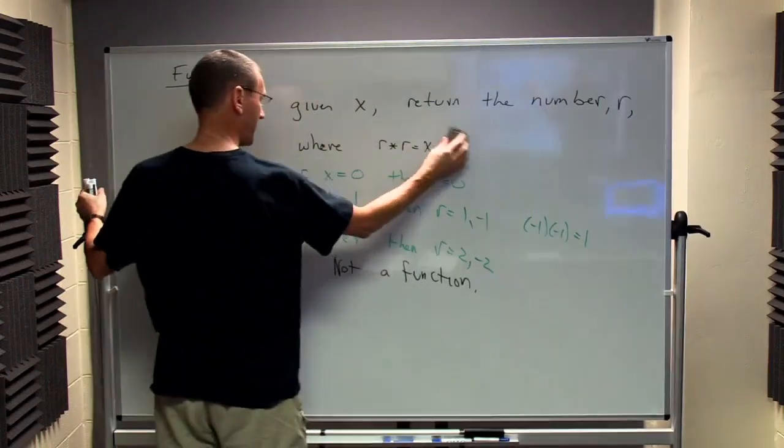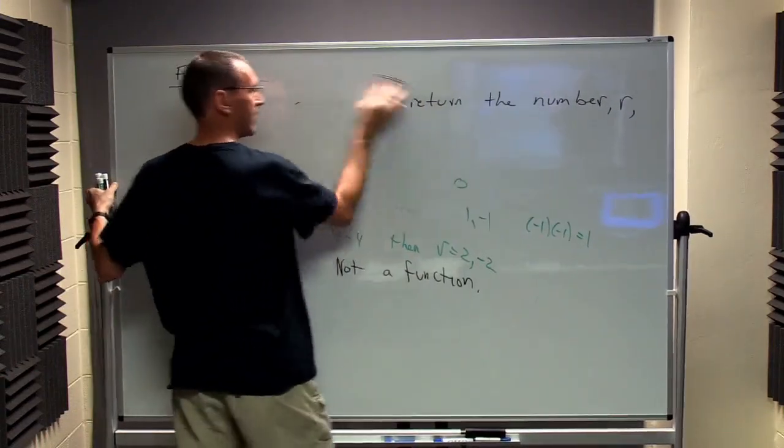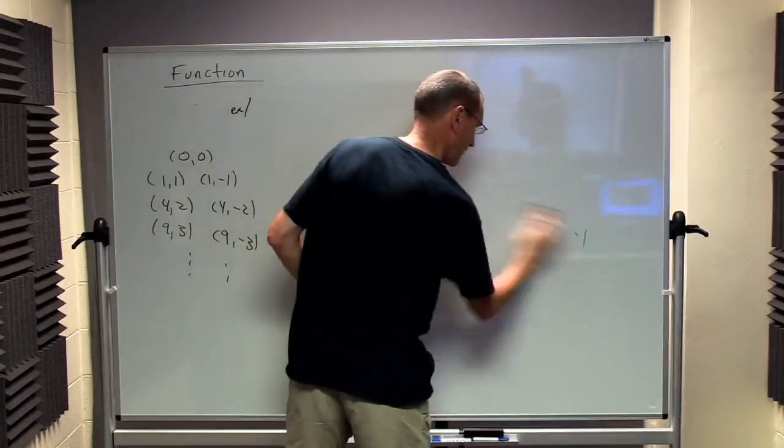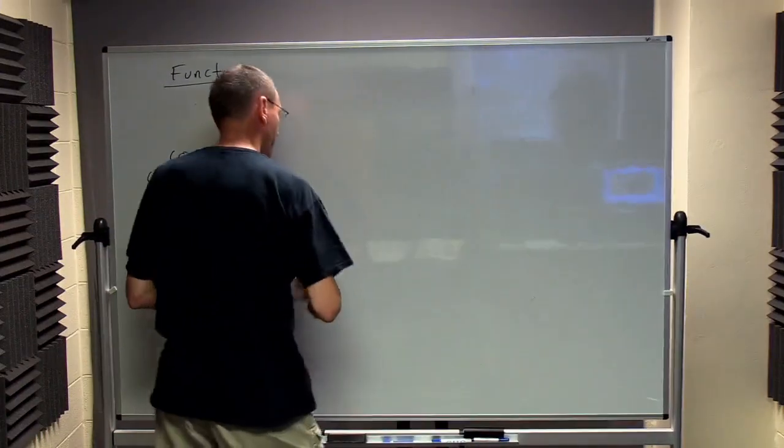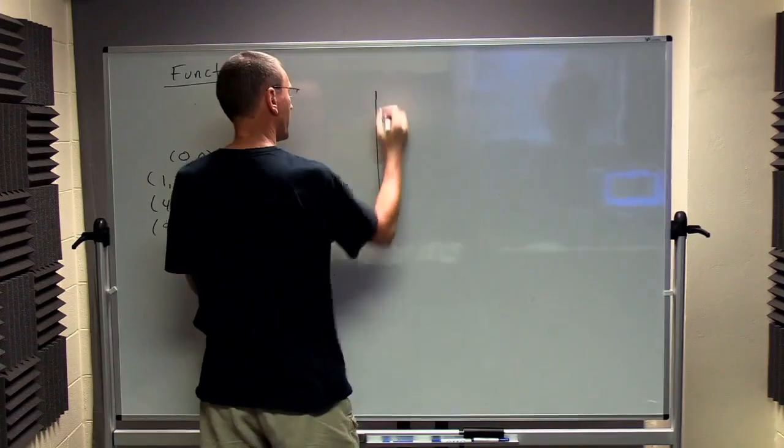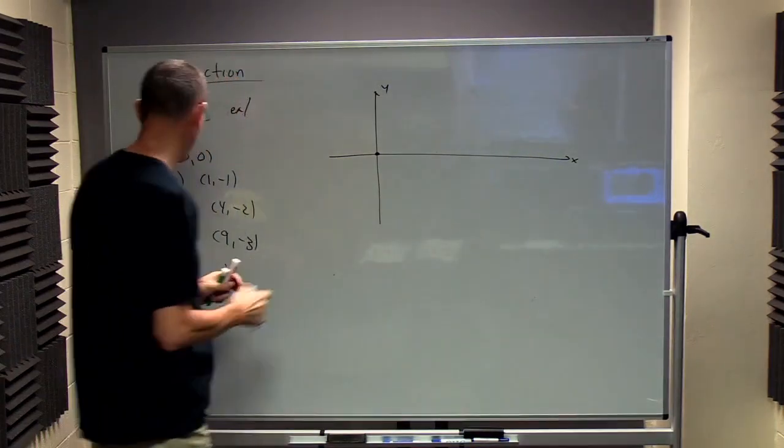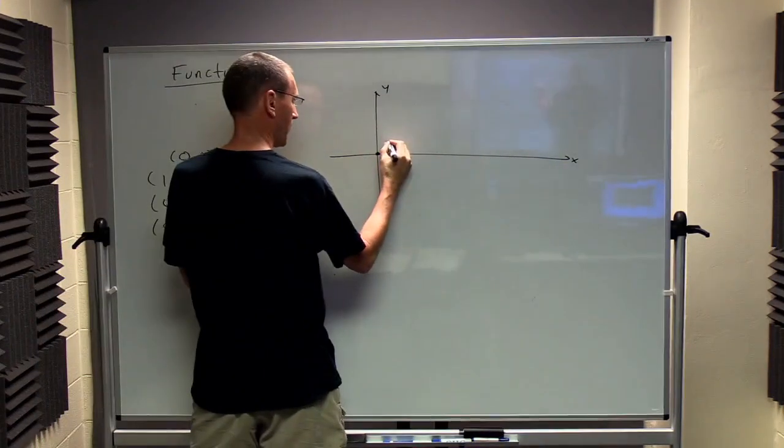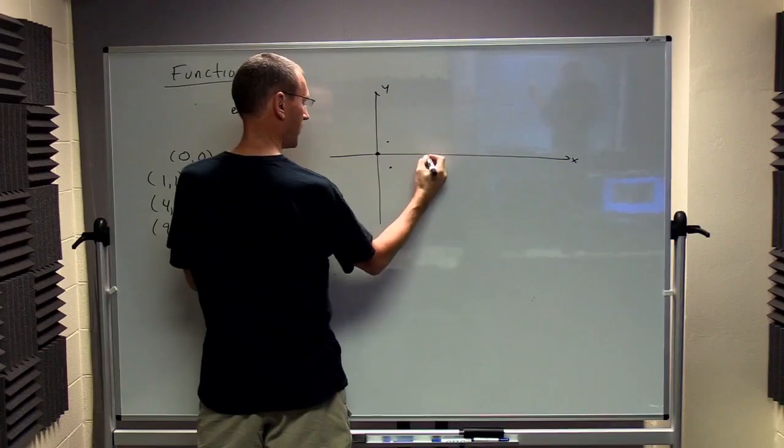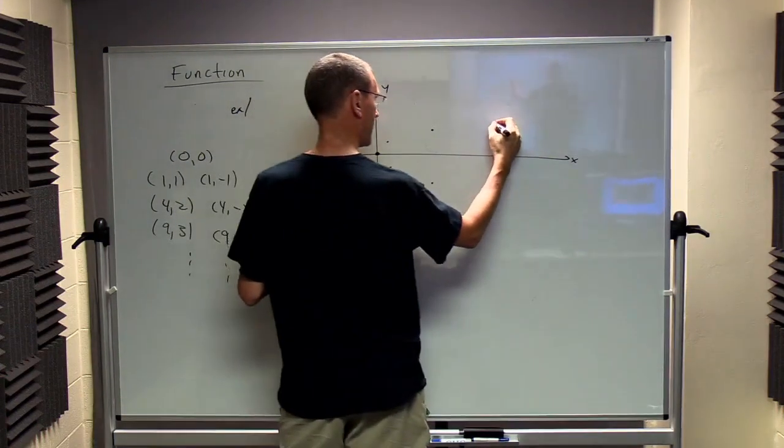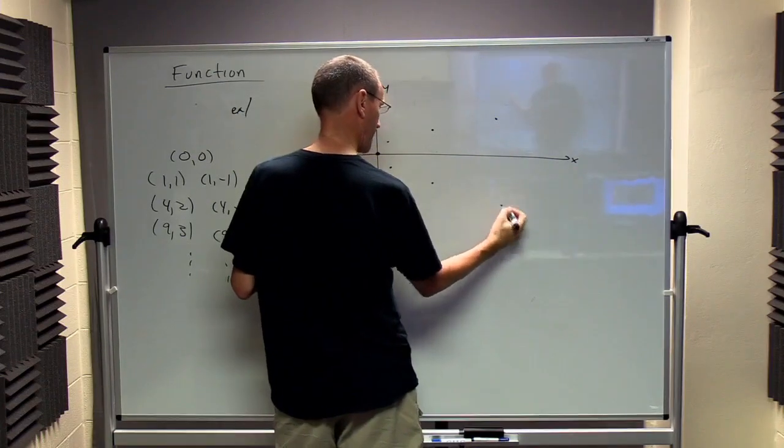So what happens? Let me graph this. Let me find the graph of this thing. So we have 0, 0. I'm going to have 1 and 1, 4, 2, then 9. 3, and 9 is 3.